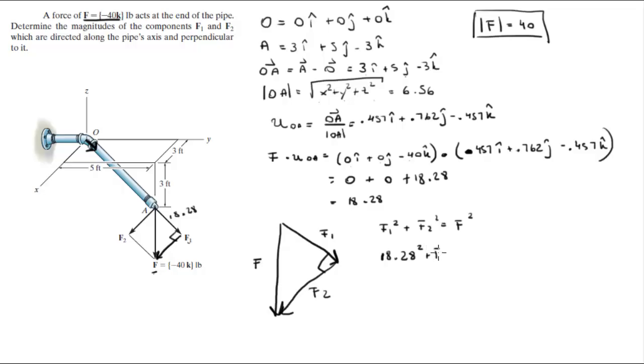Is equal to 40 square. When you solve for F2 you're going to get that it's equal to 35.58.